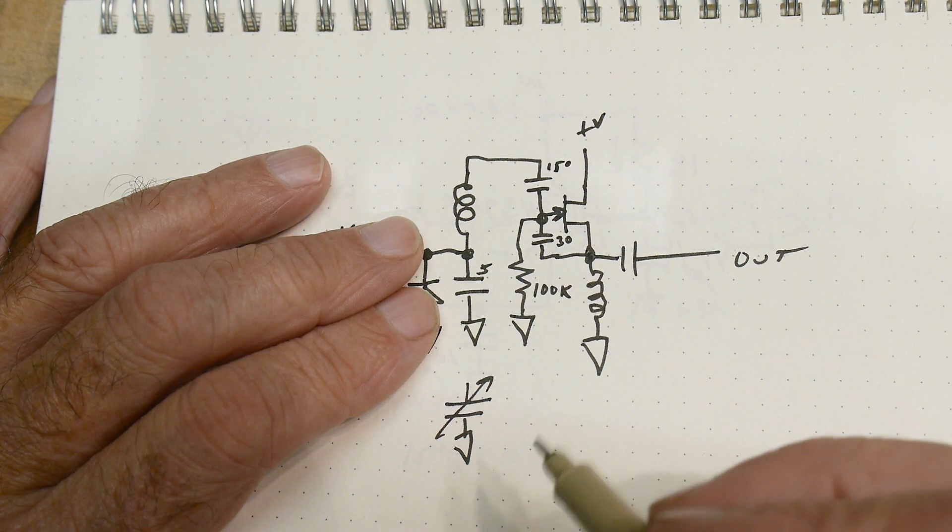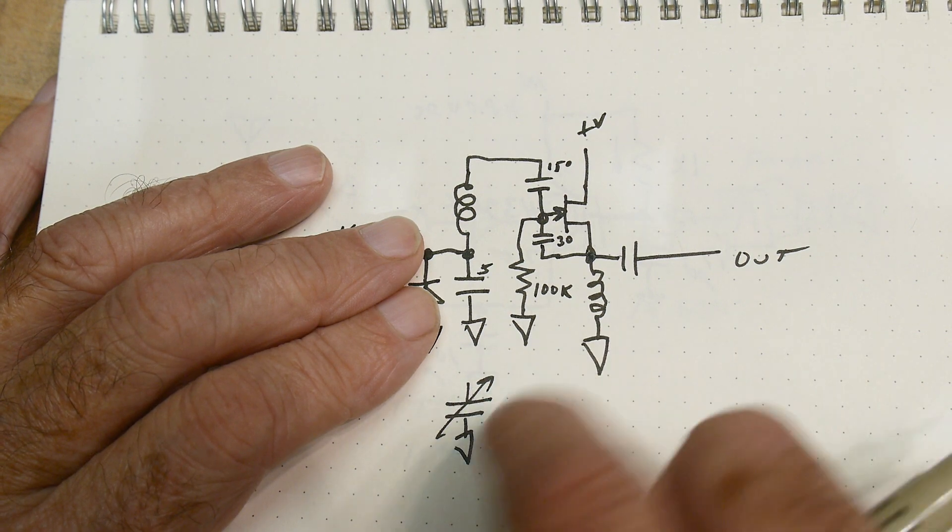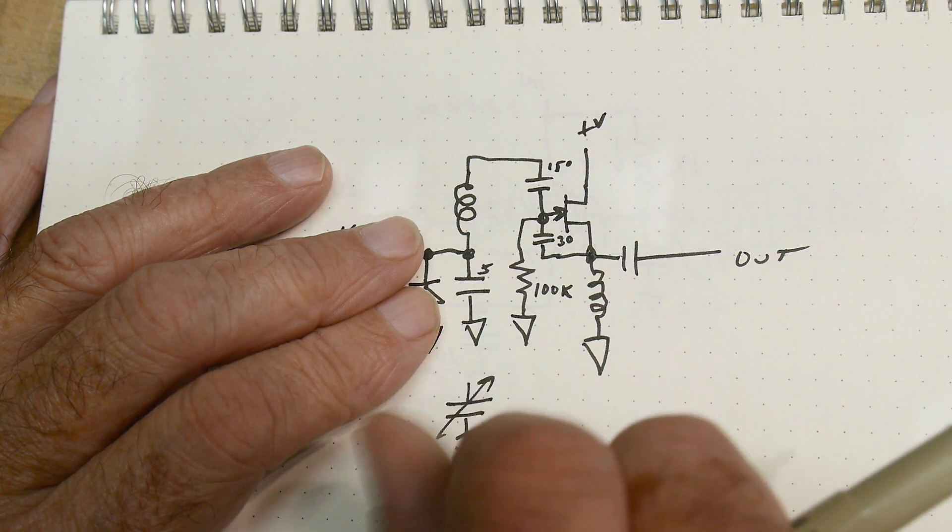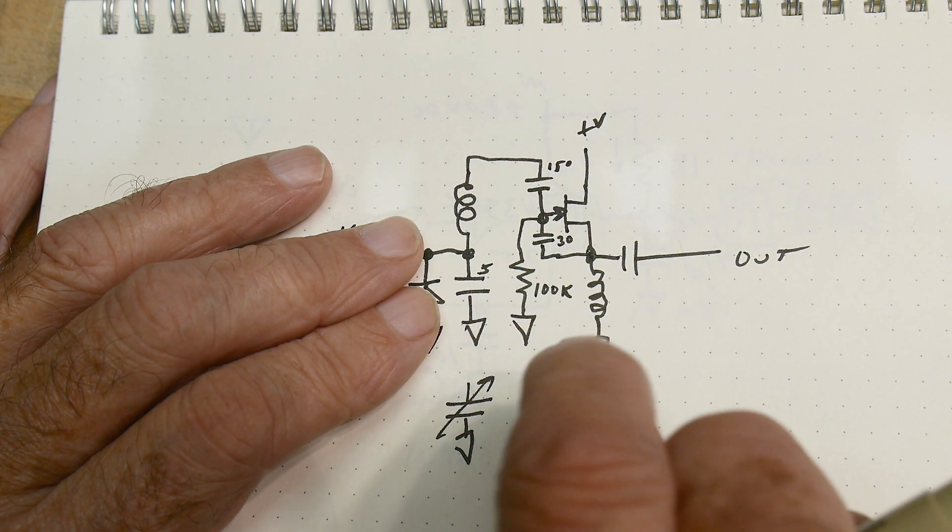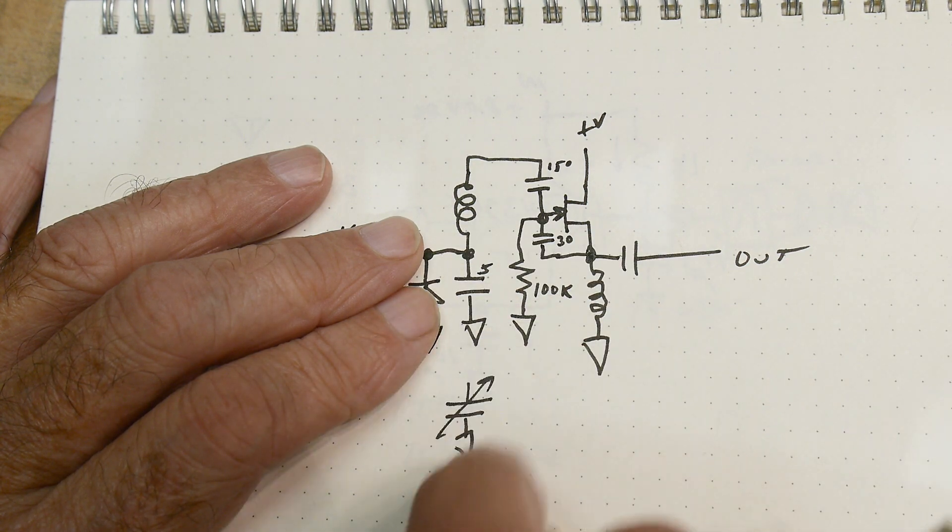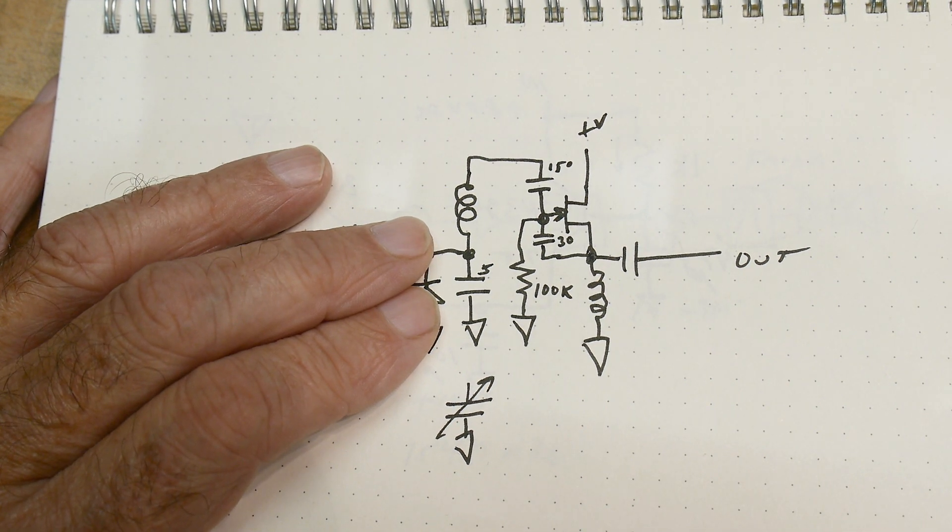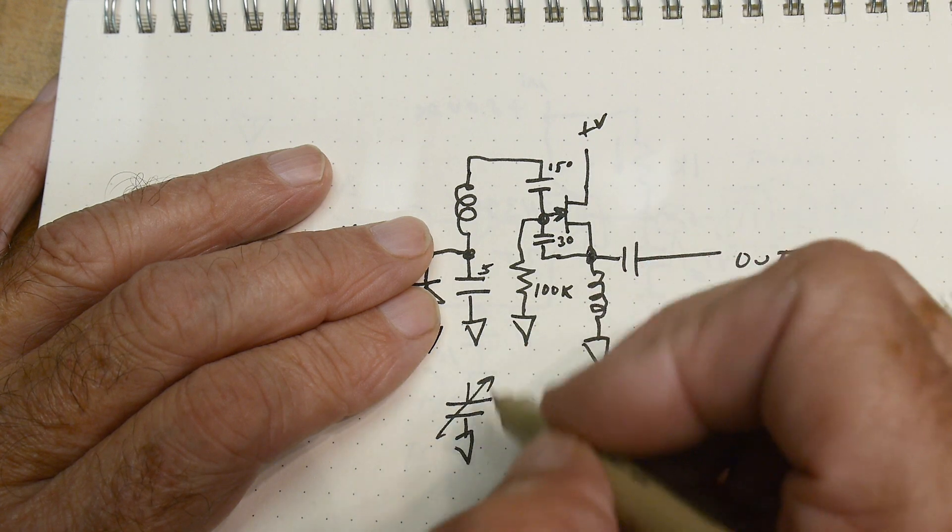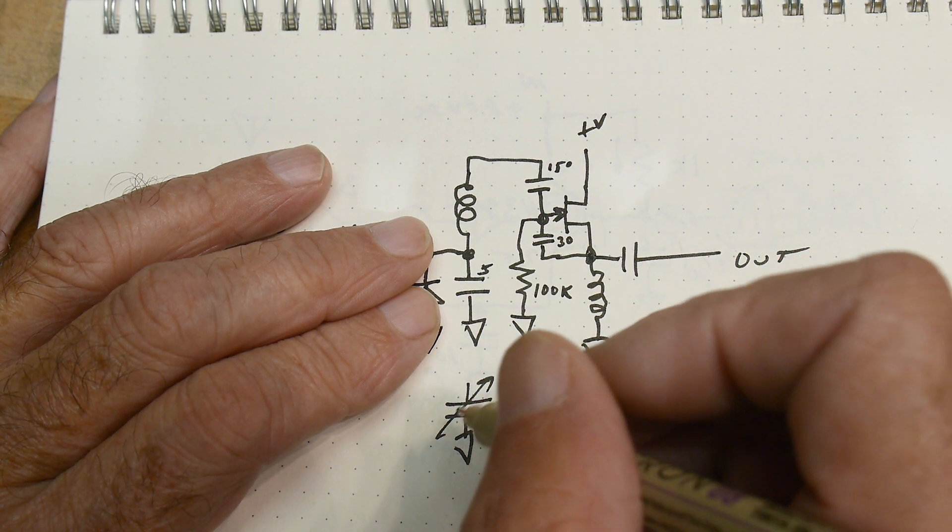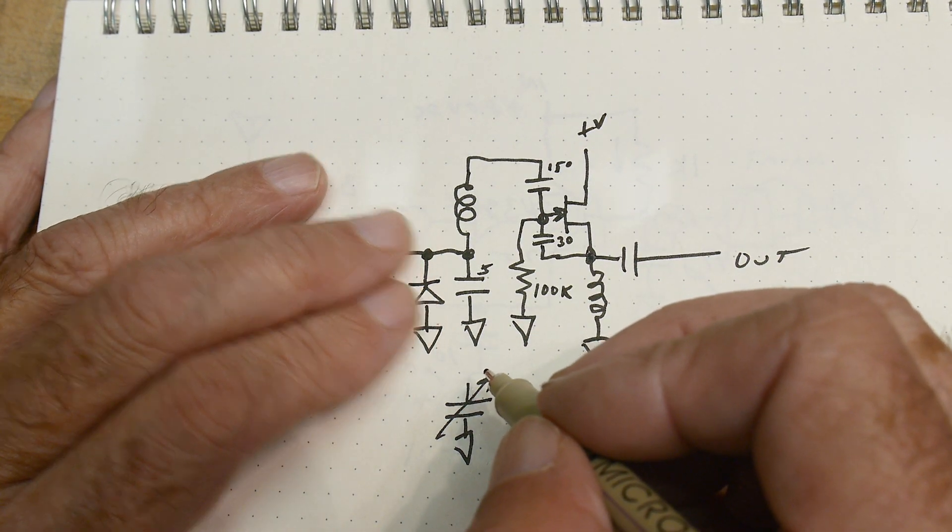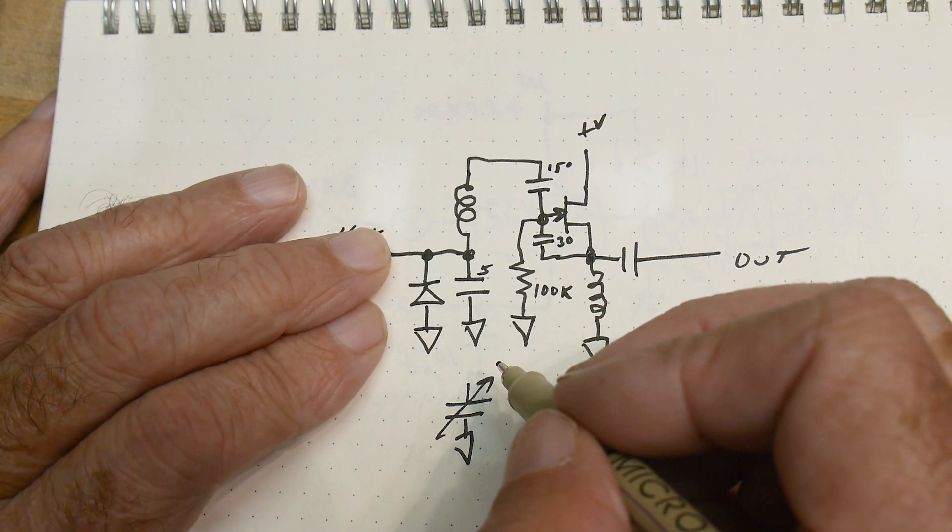But we want an electrically variable capacitor. We want to be able to control this electronically. So we could have a motor that coupled into the capacitor, and the voltage on the motor would turn it, or like in model airplanes, what are those things called? And we could mechanically do it, but we want to do it electrically.